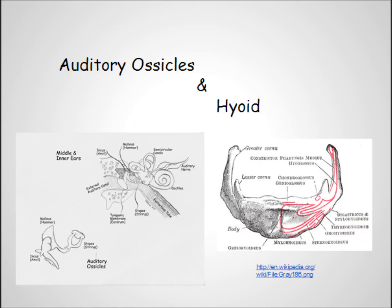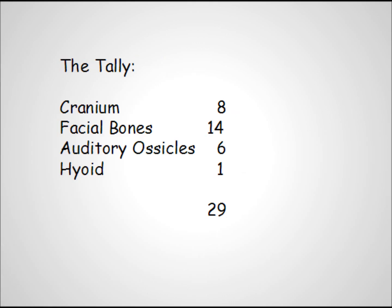And the vomer forms a part of the nasal septum. The other bones we'll include in this section are the three auditory ossicles per ear: the malleus, incus, and stapes — or hammer, anvil, and stirrup — and the hyoid bone, which we talked about last lesson. So that's 8 for the cranium, 14 for the face, 6 auditory ossicles, and the hyoid, for a total of 29 bones, if you're keeping count.